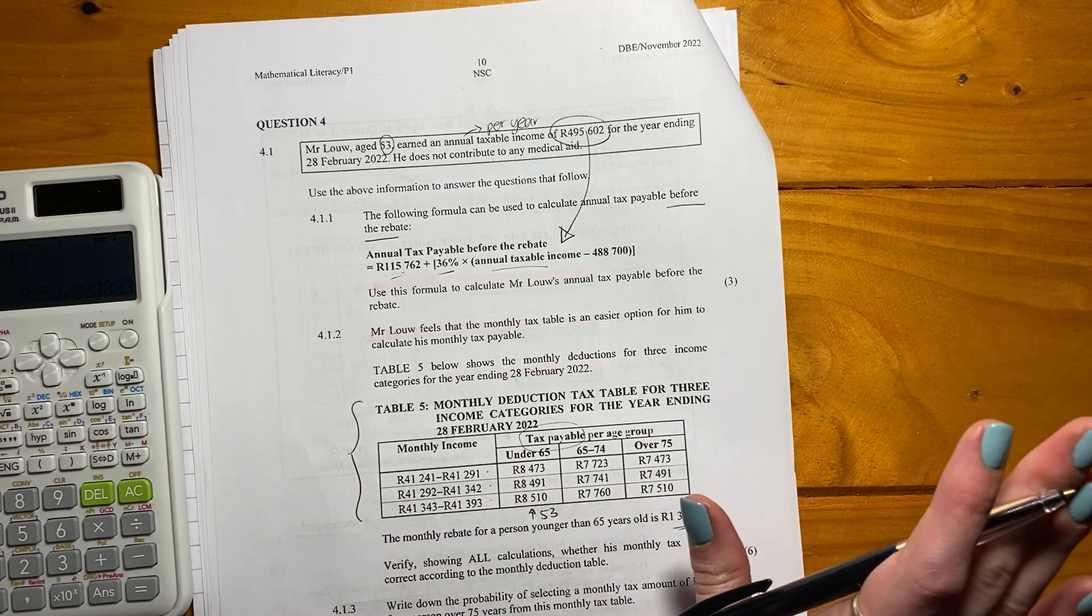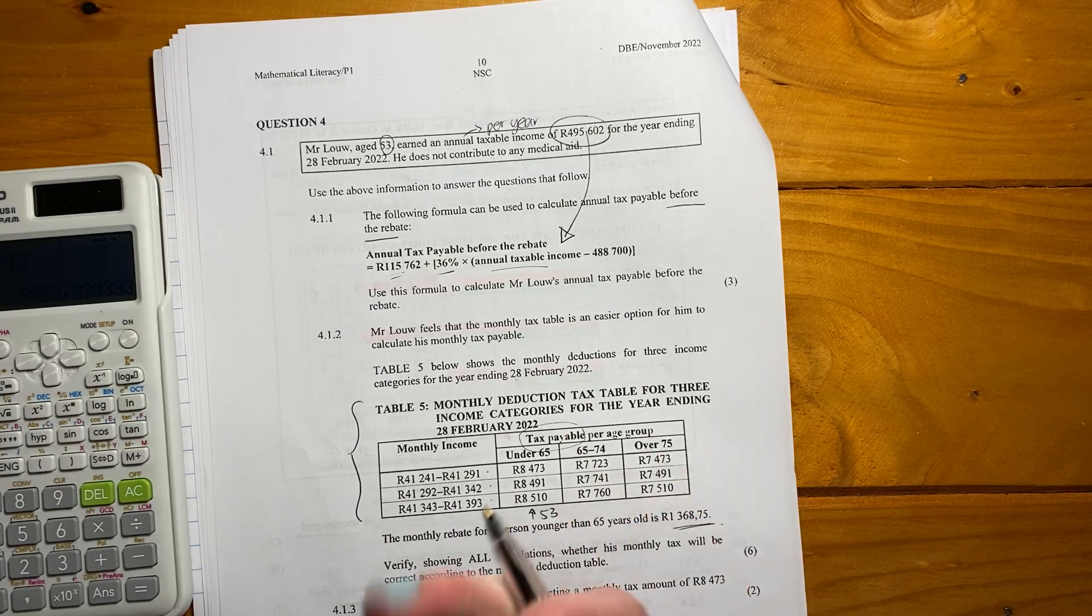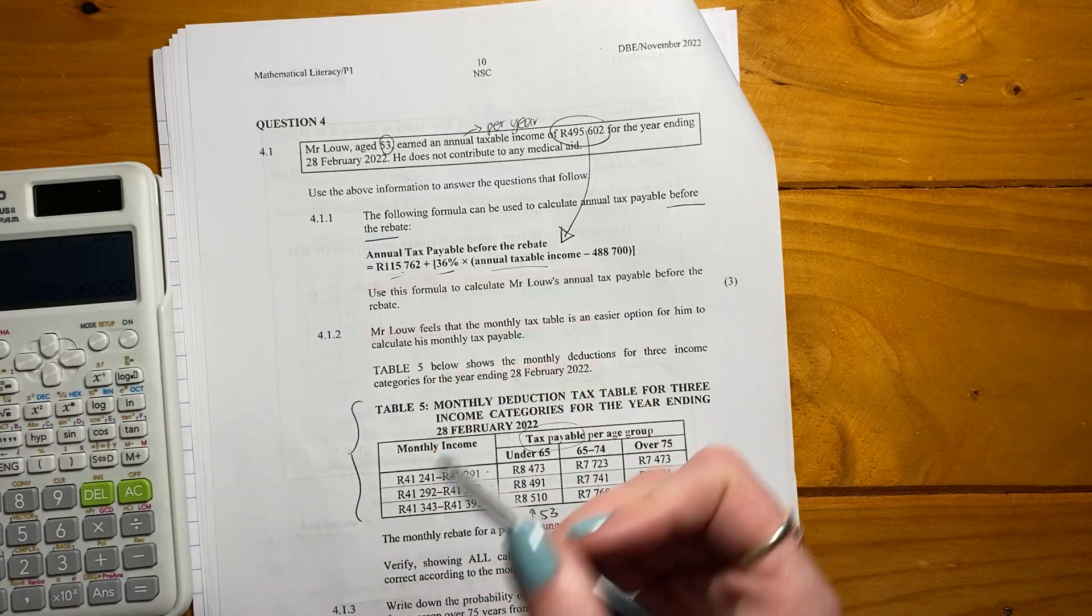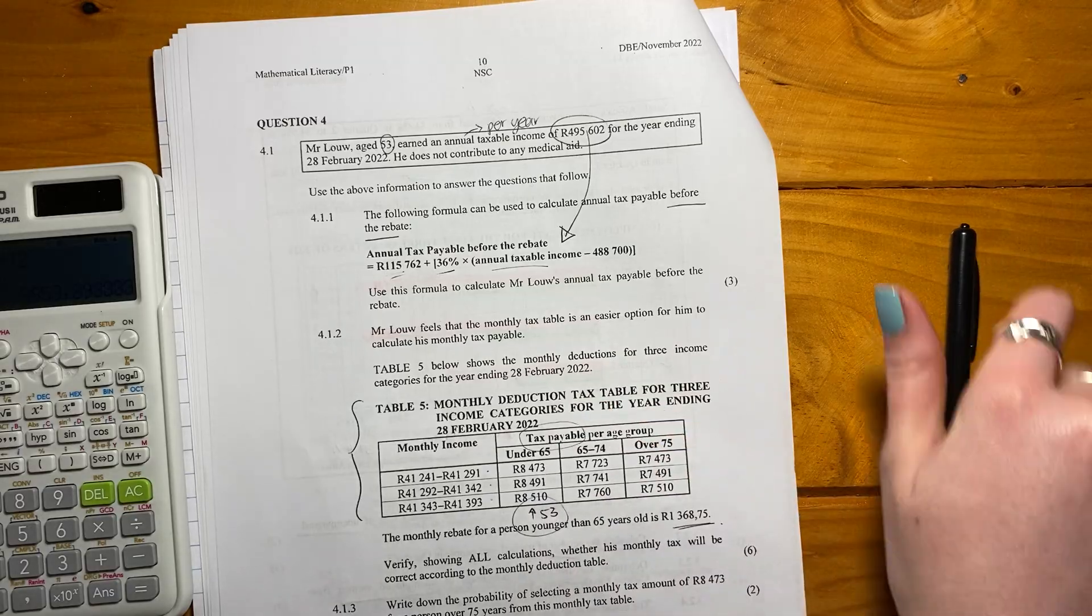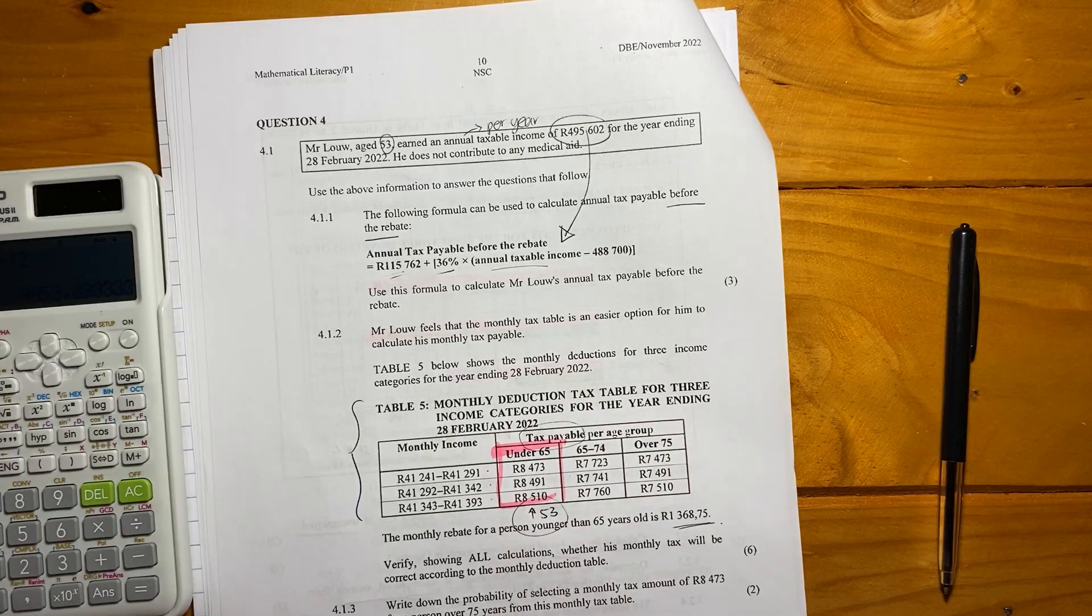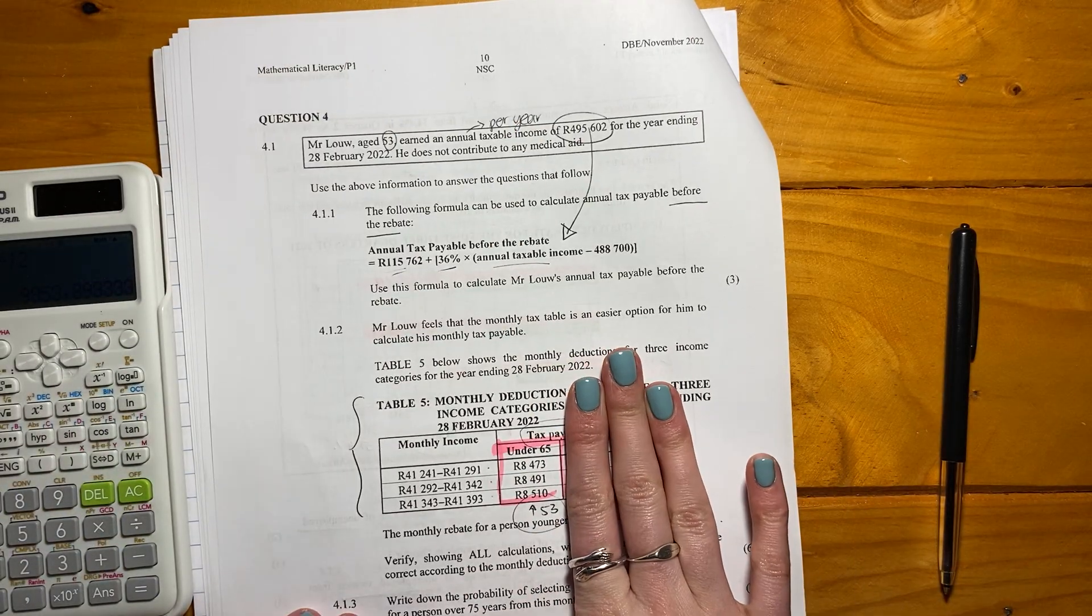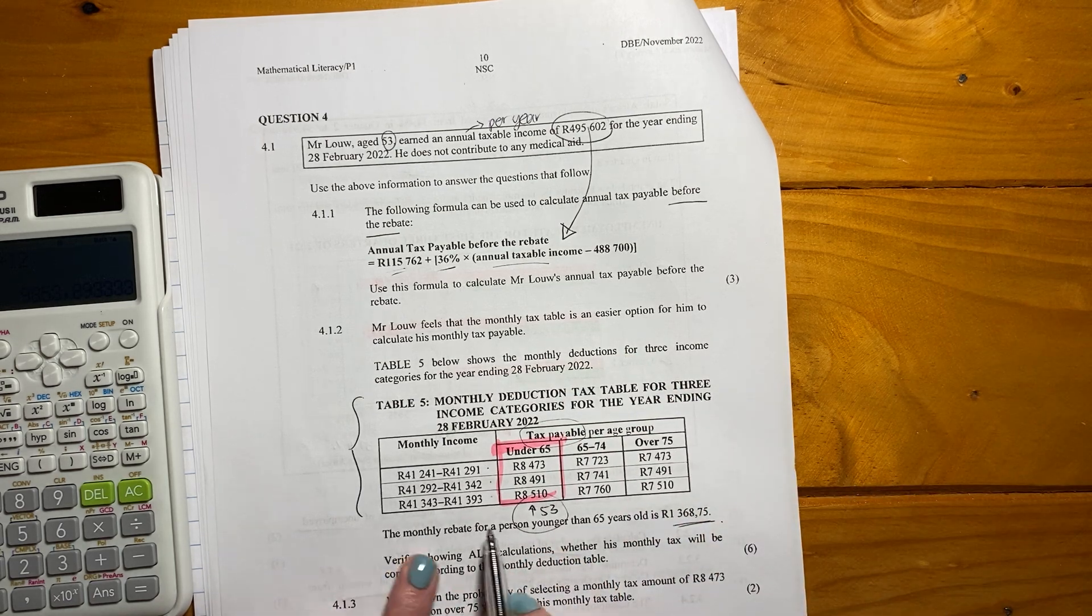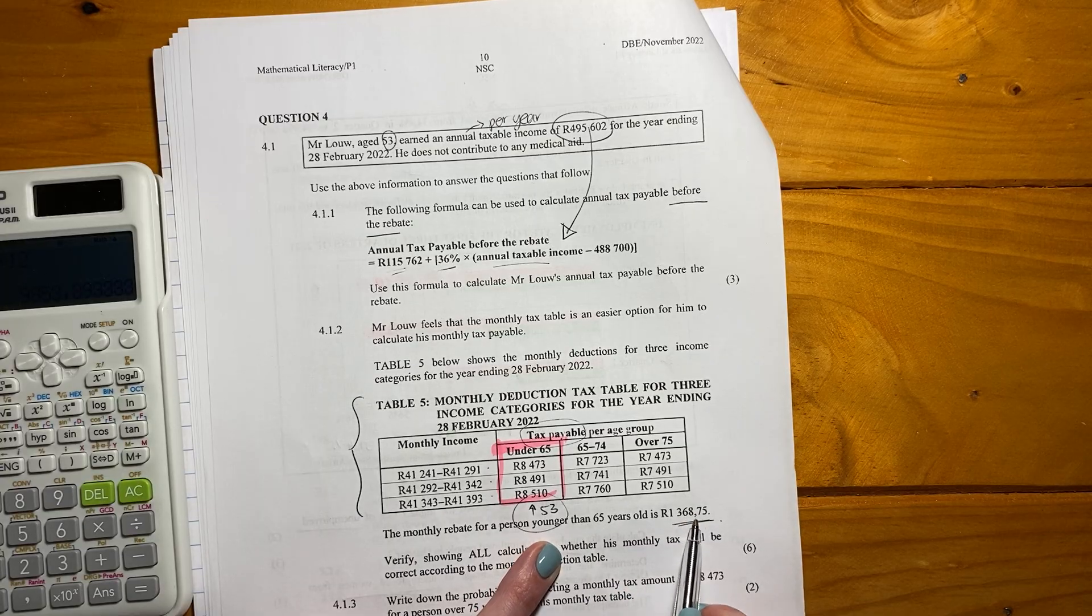So it's basically saying, we've taken your rebates into consideration, and this is what you pay to SARS. SARS is the revenue, the tax collecting service in South Africa. We know that Mr. Lowe, the person we're talking about, is going to sit in this category over here because he's 53. So he's under the age of 65, so he's going to sit over there. And that's quite useful, so we're not really caring about that side because it's not relevant. So then it says, the monthly rebate for a person younger than 65 years old is 1368.75.